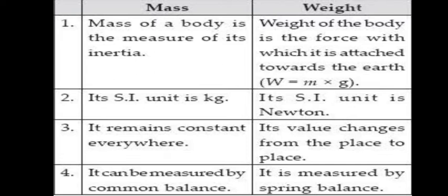Mass can be measured by the common balance. Mass is a scalar quantity. Scalar quantity and vector quantity are physical quantities. A scalar quantity represents only magnitude, not any particular direction — that is why mass is a scalar quantity.